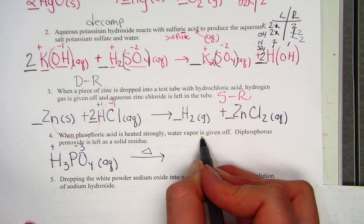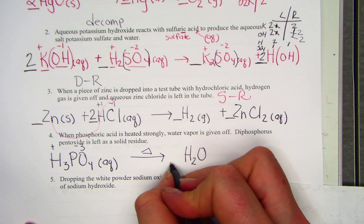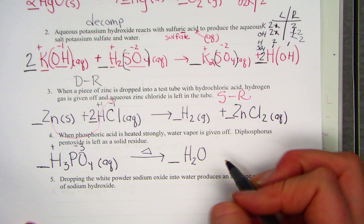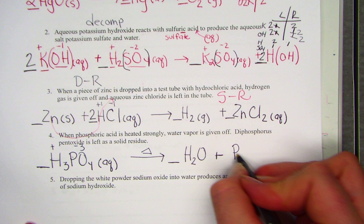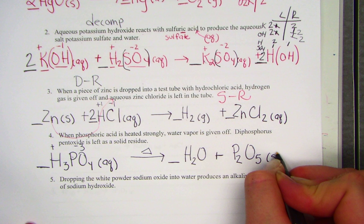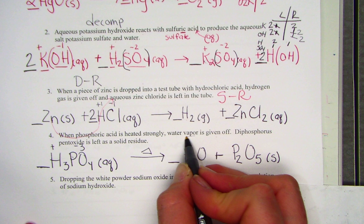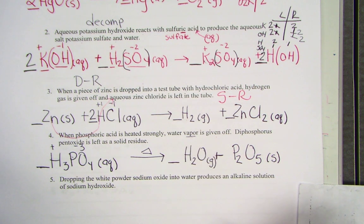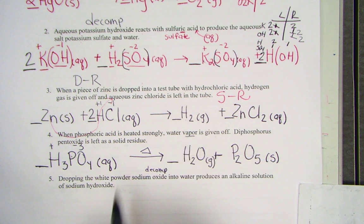Water vapor is given off. Water is written as H2O, putting my coefficient lines in, and diphosphorus pentaoxide left as a solid residue. You know, the word water vapor indicates the state of matter as a gas, so I can add that in. A decomposition pattern where I have one reactant breaking down into simpler pieces.